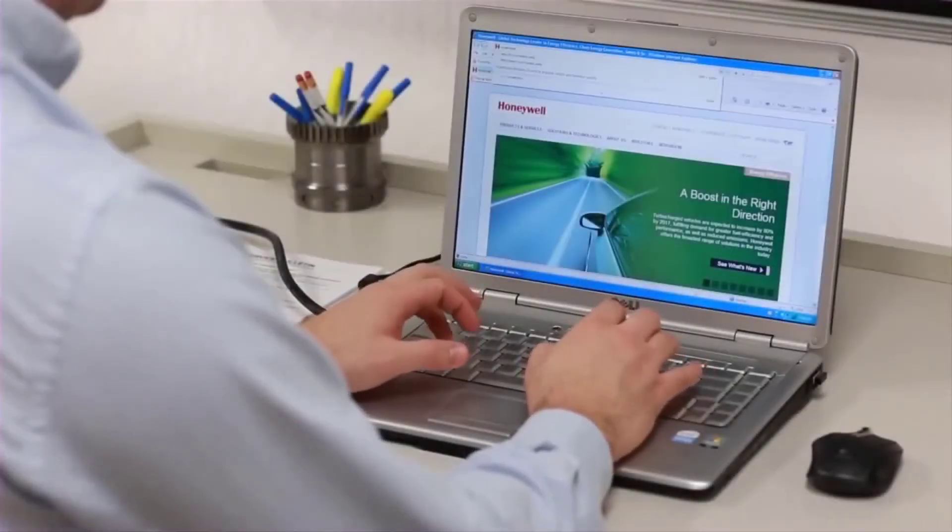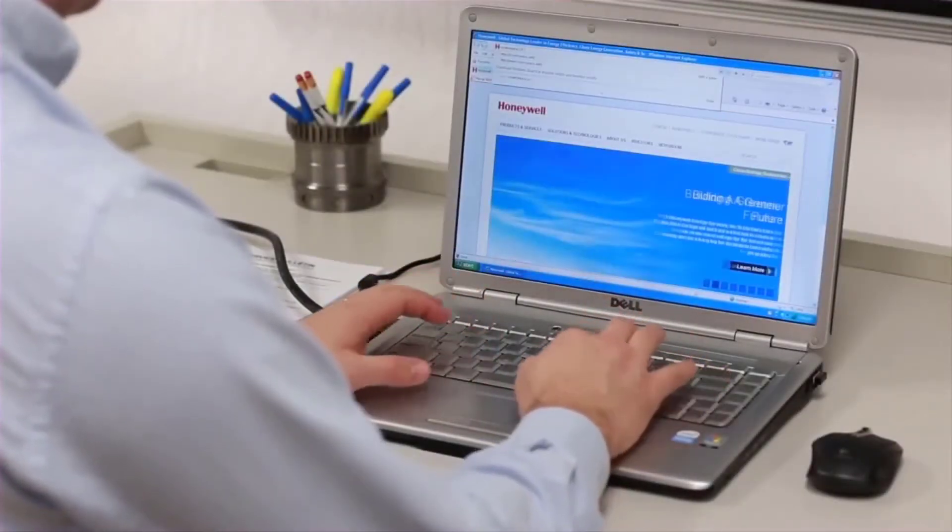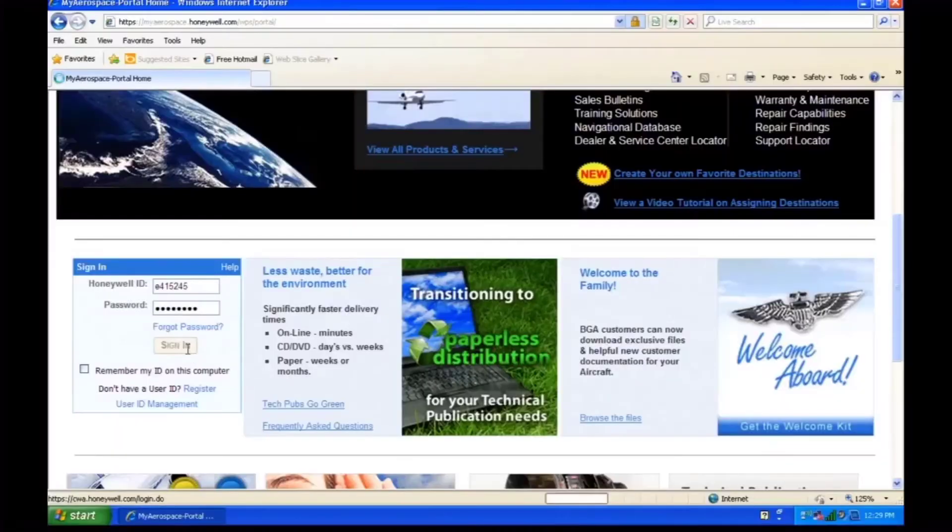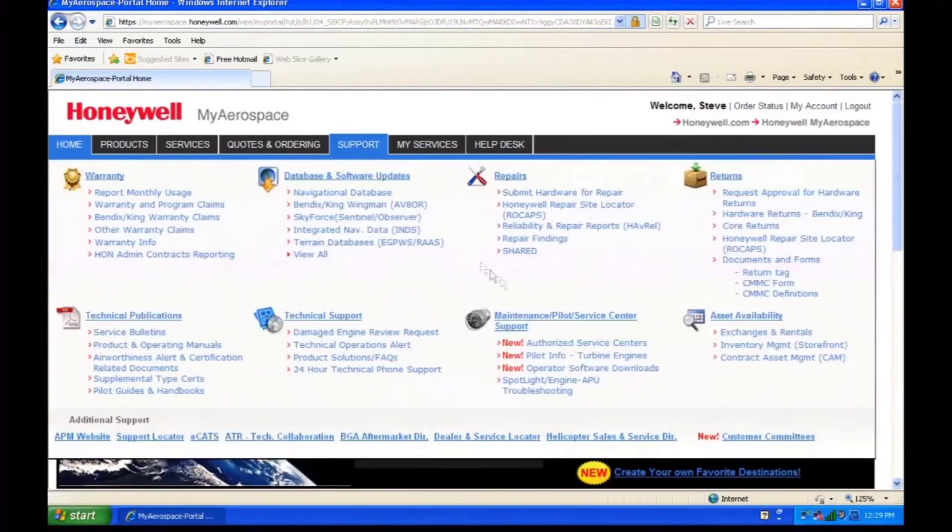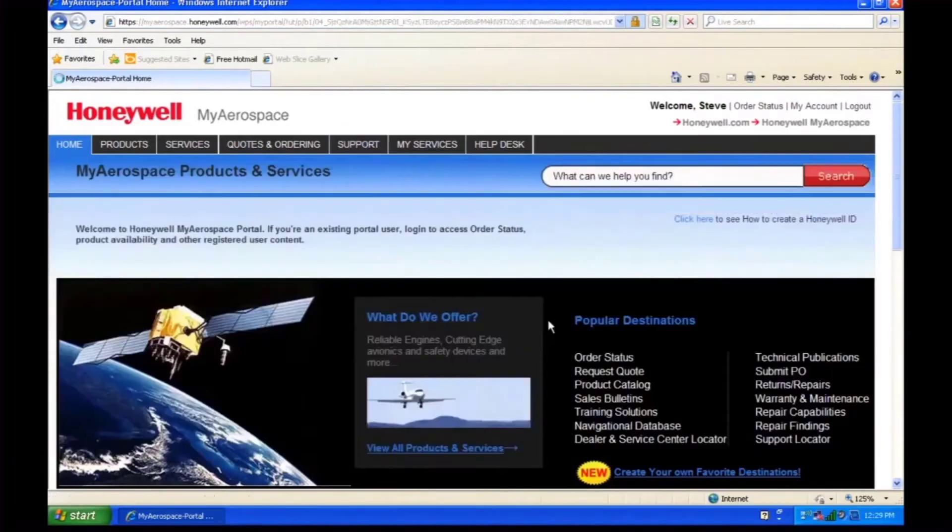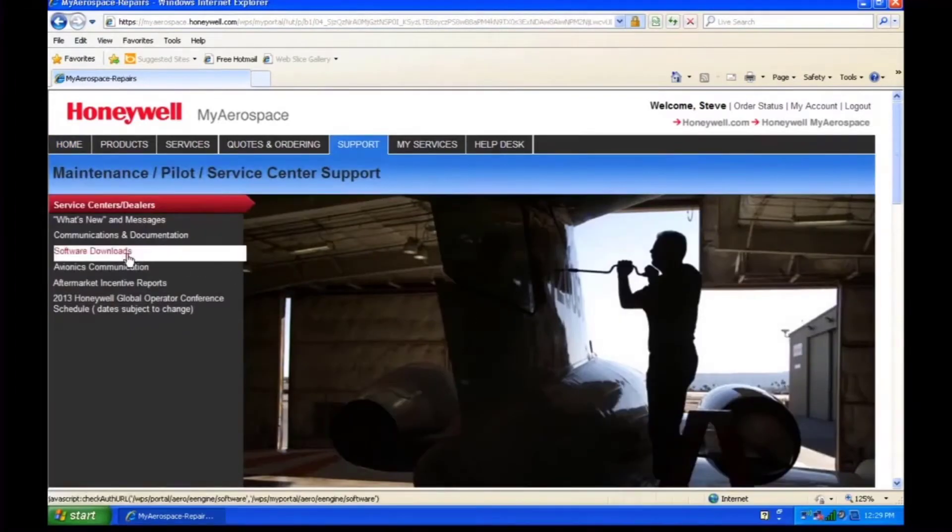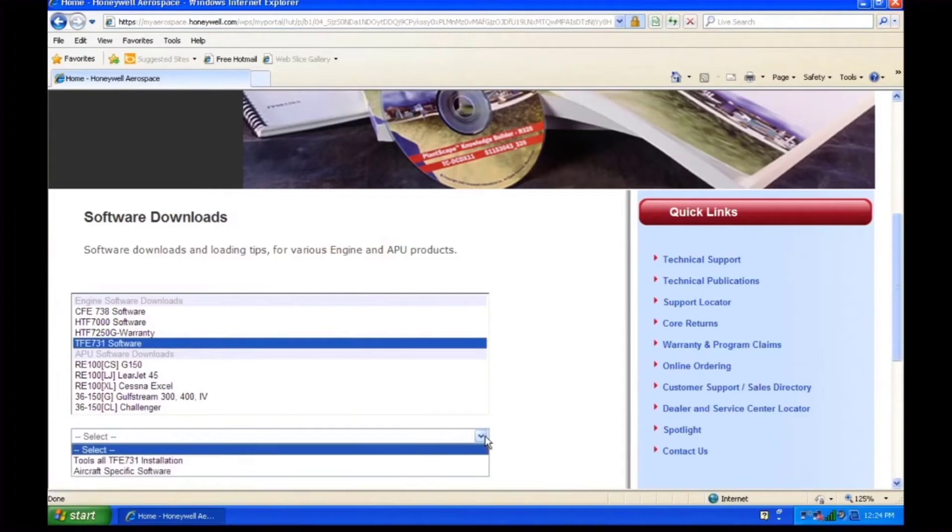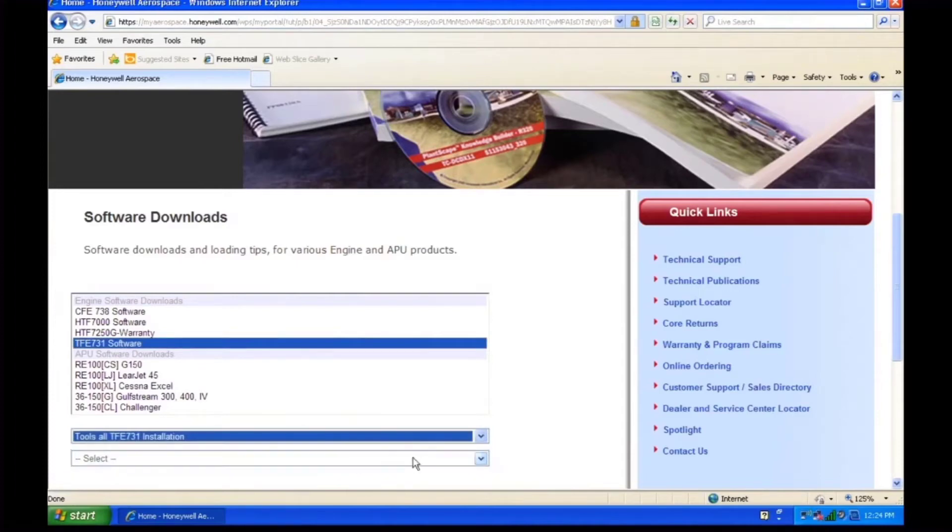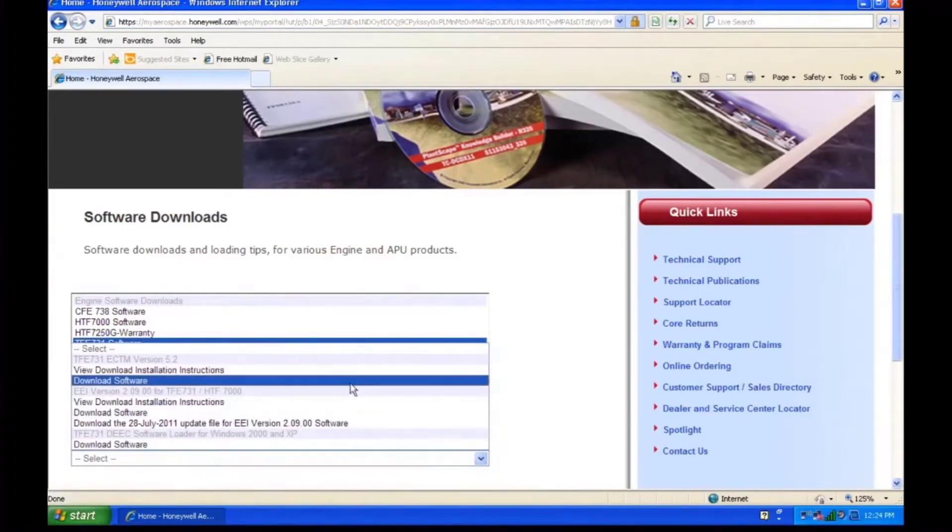First, we'll download the software from MyAerospace.com. Log on and go to Maintenance and Pilot Service Center Support and Software Downloads. You'll find the installation files under TFE 731 Software. Look for TFE 731 ECTM version 5.2 and download it.